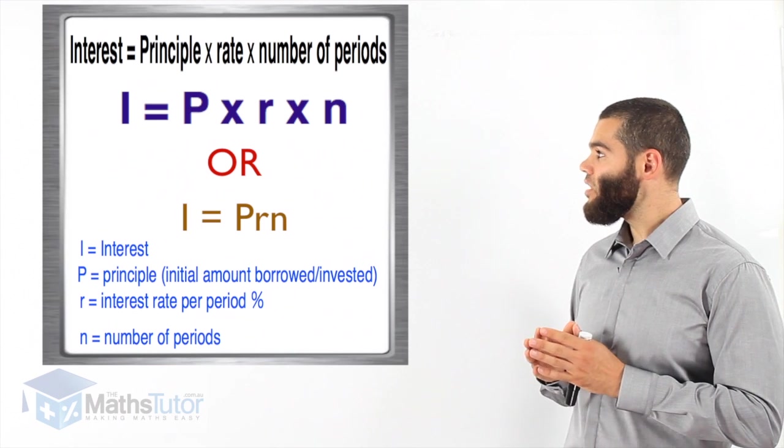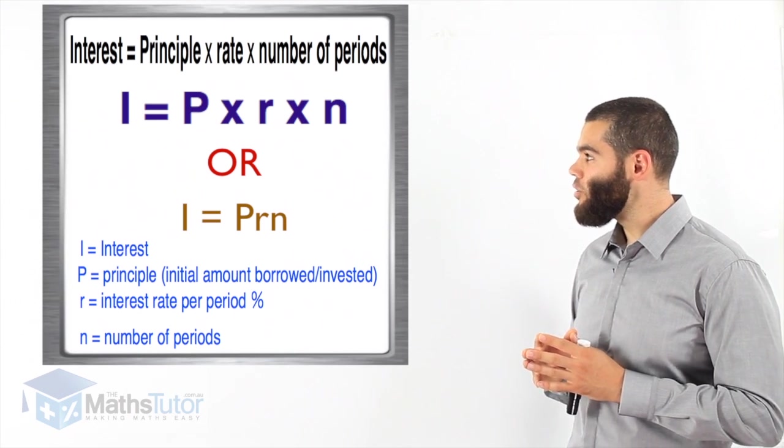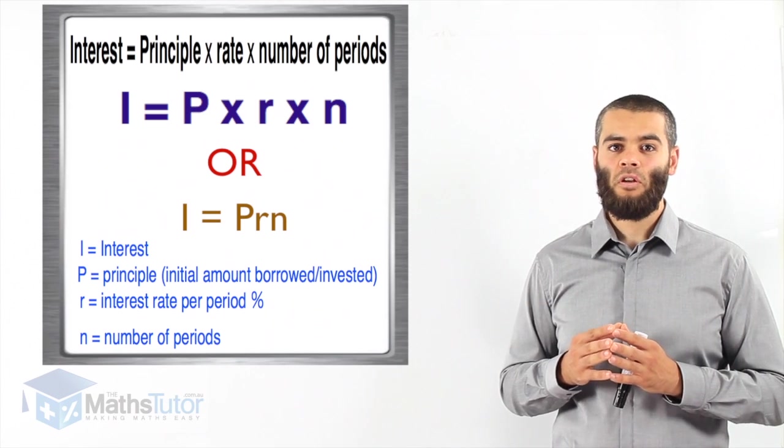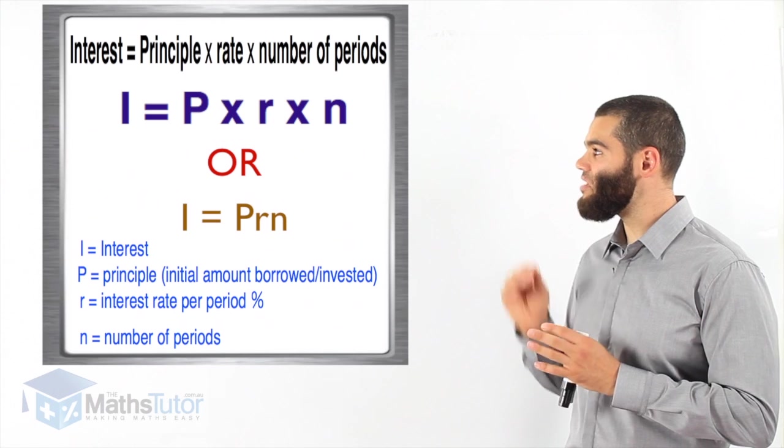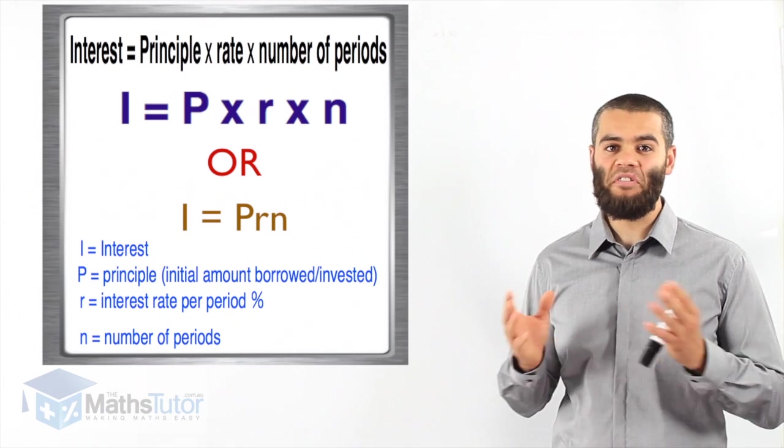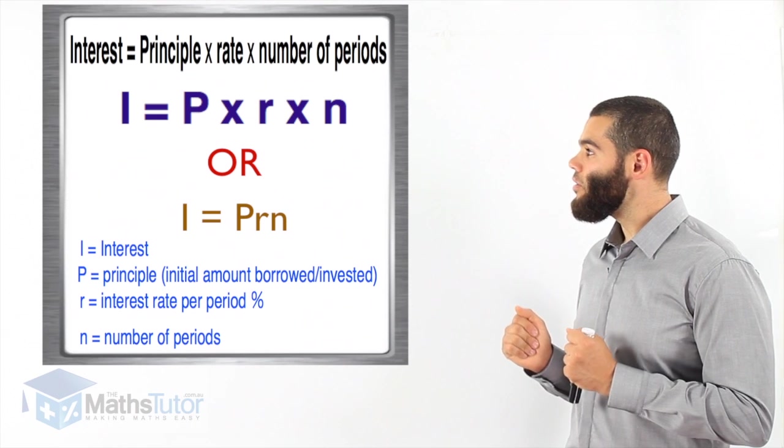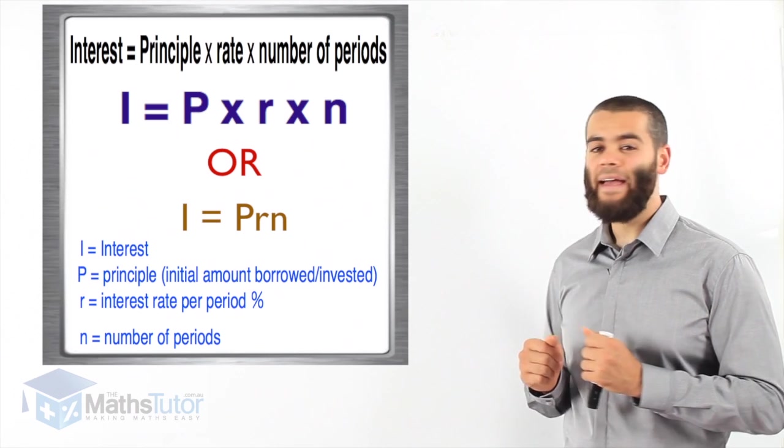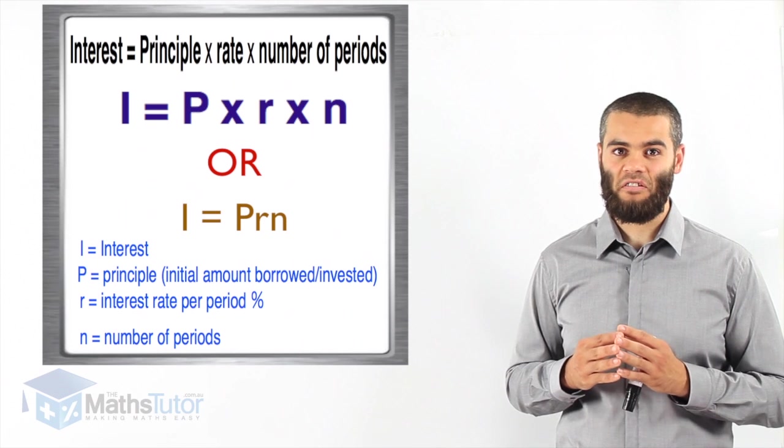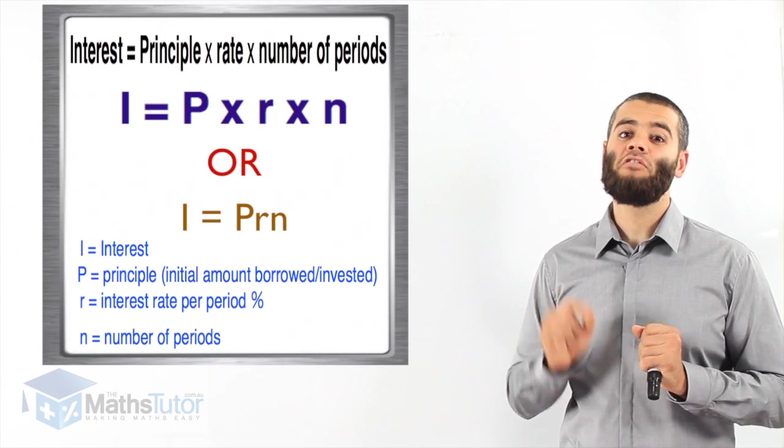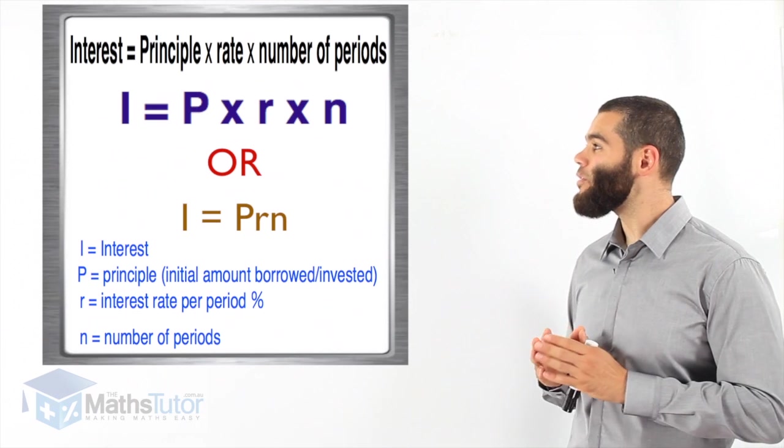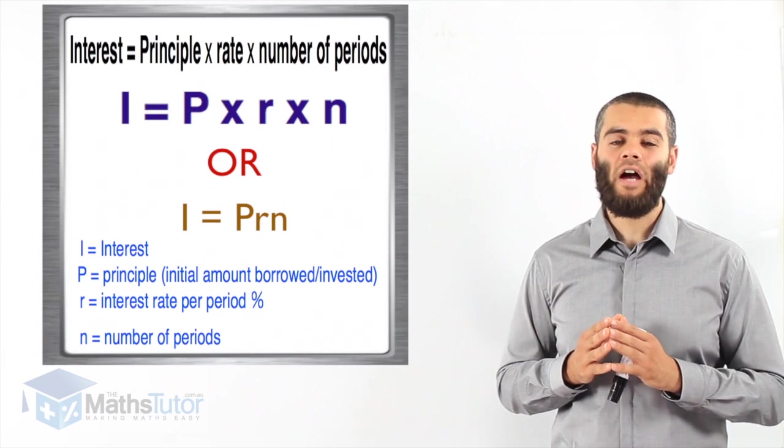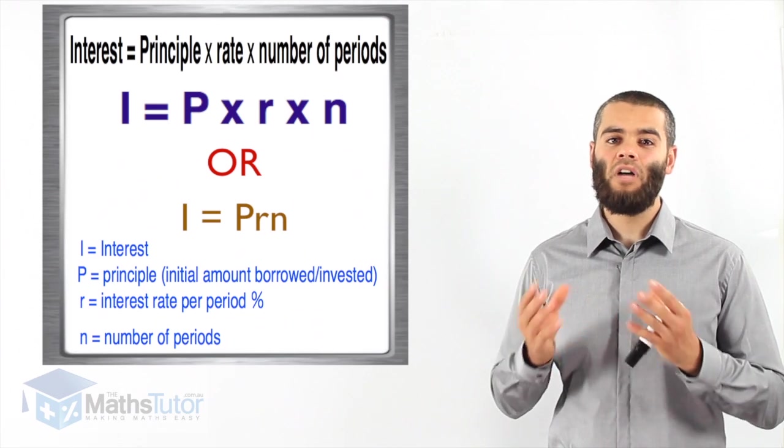Interest equals principle times the rate of interest times the number of periods. So, here we have the formula. To calculate the interest, we basically use this formula. We multiply the principle times the rate of interest per period, and the number of periods. That is the theory. So, remember this formula. I equals PRN. I equals P times R times N.